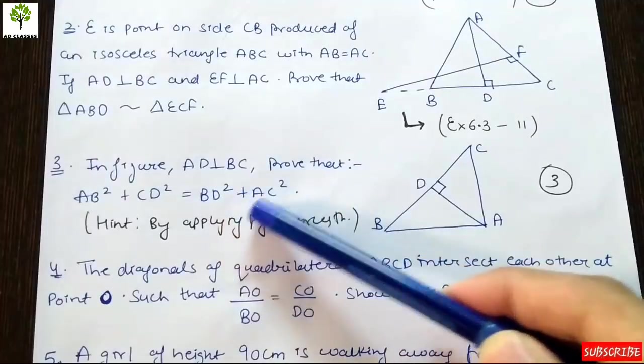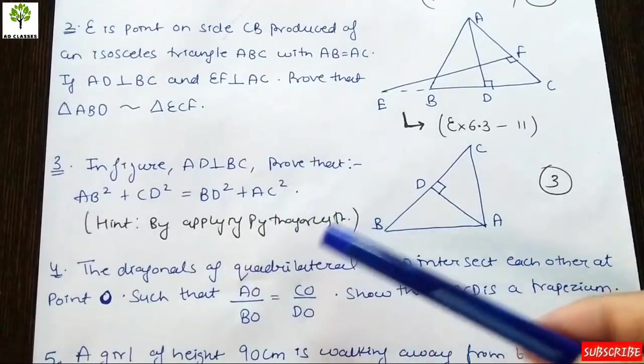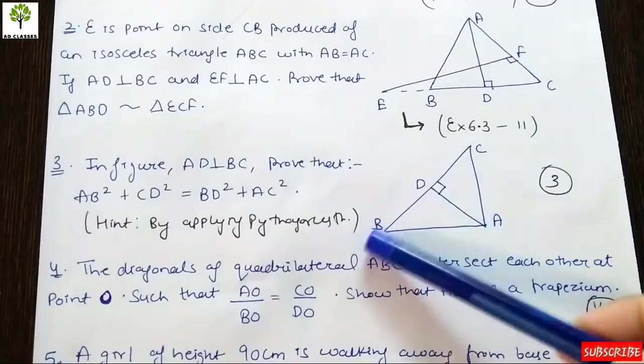In the figure, AD is perpendicular to BC. Prove that AB square plus CD square equals BD square plus AC square. Hint: Apply Pythagorean theorem.